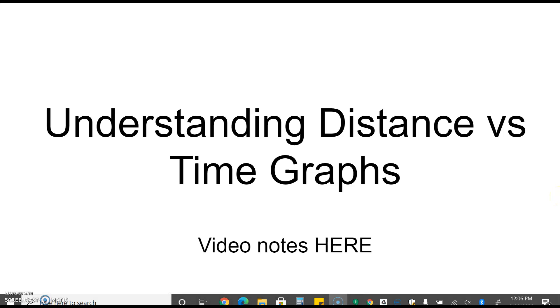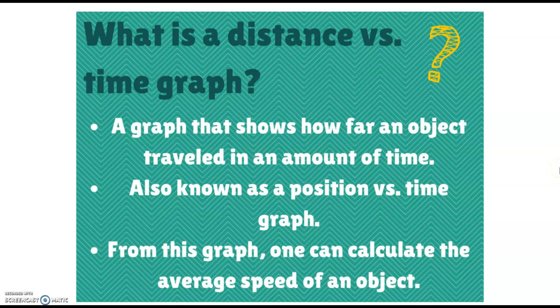Understanding distance versus time graphs. What is a distance versus time graph? A distance versus time graph is a graph that shows how far an object traveled in an amount of time. You might also hear it be called a position versus time graph. From a distance versus time graph we are able to calculate the average speed of an object.